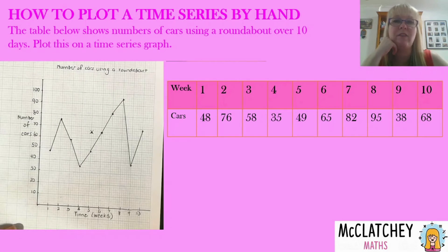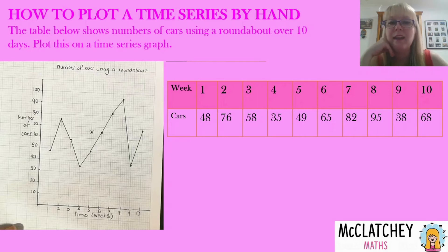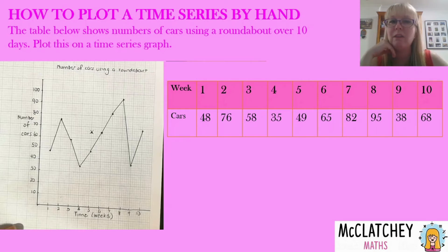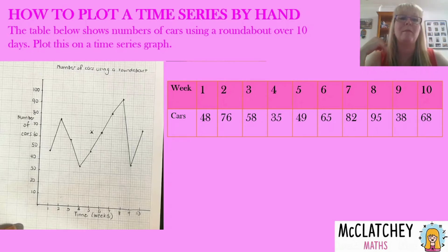Notice I haven't started the graph all the way down to zero because there is no zero time, and I haven't continued the graph down from the 10th week to the bottom because that would imply the number of cars goes back to zero in the 11th week. I've just started it from the first week and finished at the last week. It's very clear that I made a mistake and crossed it out because I didn't draw any lines to or from that point.